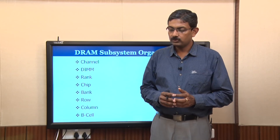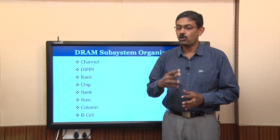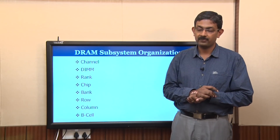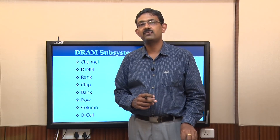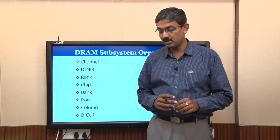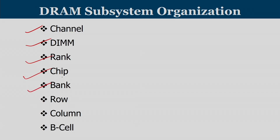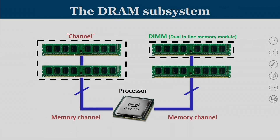Now let us look at the organization of DRAM. DRAM itself consists of a multiple-level hierarchy: channels, DIMMs, ranks, chips, banks, rows, columns, and bit cells. We will see what each one of them is.